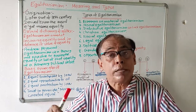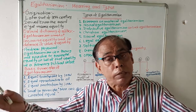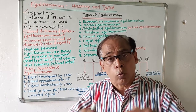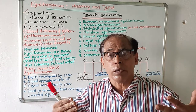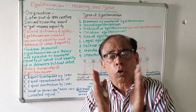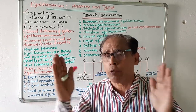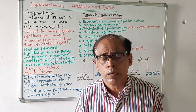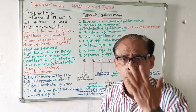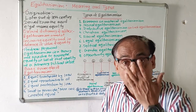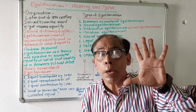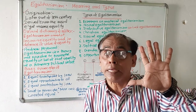No special treatment will be given to anybody. All will be considered as equal irrespective of caste, color, religion, and language. So we are now clear about the meaning of egalitarianism. Let us now discuss the main five principles of egalitarianism.